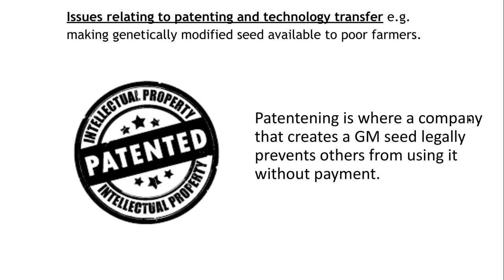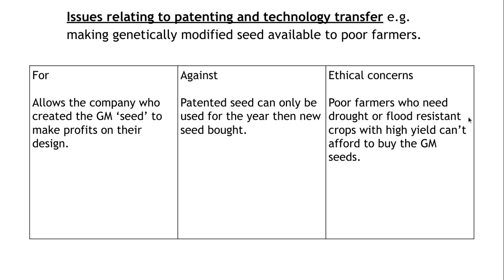Patenting is the big one here. Patenting is where a company can create something that's been genetically modified — for example a seed — and patent it to prevent others from using it without paying. The main ethical concern is that farmers who would benefit most from these patented seeds — for example seeds that can grow in drought land with little water — are often poorer farmers who need drought-resistant and flood-resistant crops for high yield, but can't afford to buy patented seeds on a yearly basis, as once the year is up you must destroy the old seed and buy new ones. The advantage is really for the company, which benefits greatly from profits on their genetically modified seed design.